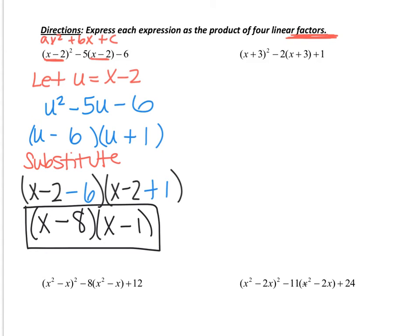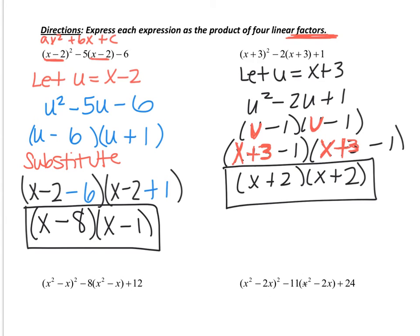Let's try the second one — you guys try this. Model it the same way as the previous problem, then hit resume when finished. Here's your answer. You want to analyze the parts that are the same — so let u equal x plus 3. Rewrite as u squared minus 2u plus 1, then factor as u minus 1 times u minus 1. Substitute back in: x plus 3 minus 1 gives x plus 2, twice. So the answer is x plus 2 times x plus 2, which can also be written as x plus 2 squared.